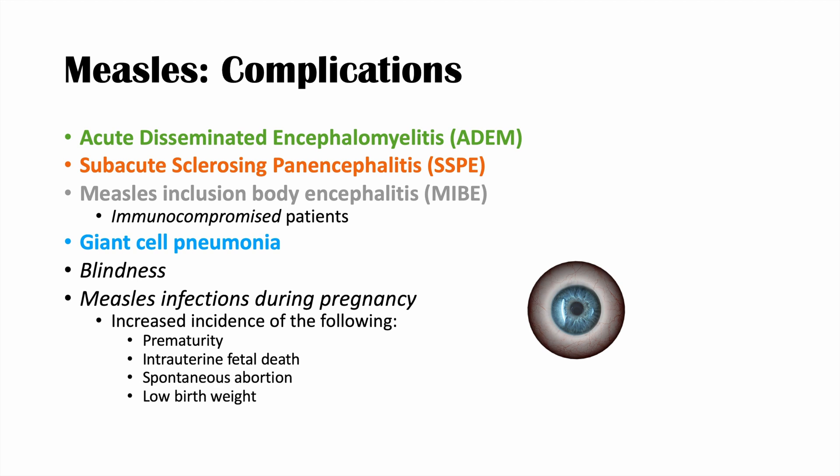A lot of things can happen if a mother becomes infected with measles during pregnancy. We see increased incidences of prematurity — babies born less than 37 weeks gestational age — higher rates of intrauterine fetal death, higher rates of spontaneous abortion, and lower birth weights. Even if the baby survives, low birth weight and prematurity can lead to issues like failure to thrive.